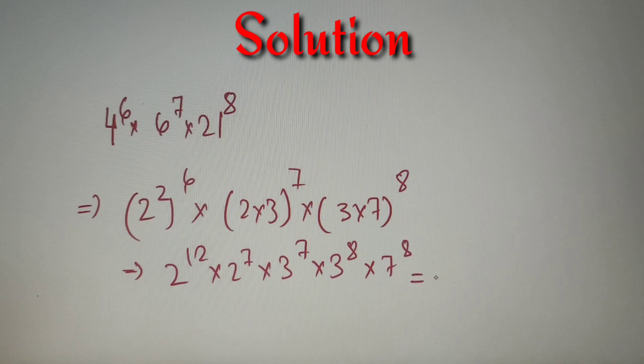Now using the properties of indices, we can say that the final number will be equal to 2 raised power 19 into 3 raised power 15 into 7 raised power 8. So this is our given number in the prime factorized form and now let's find out the number of perfect square factors for this given number.